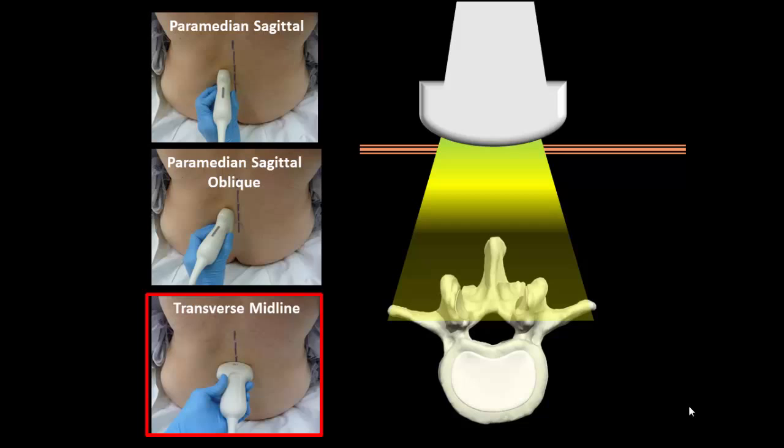The paramedian sagittal oblique view serves primarily to identify the intervertebral levels by counting up from the L5-S1 junction. In the simplified approach to ultrasound-assisted neuraxial blockade described here, the L3-4 intervertebral level is estimated using the intercristal line, and only the transverse midline view is necessary.